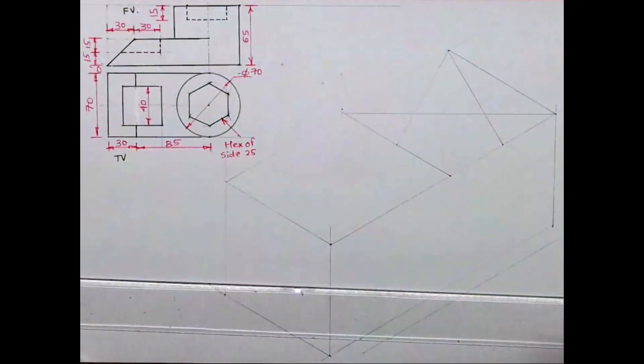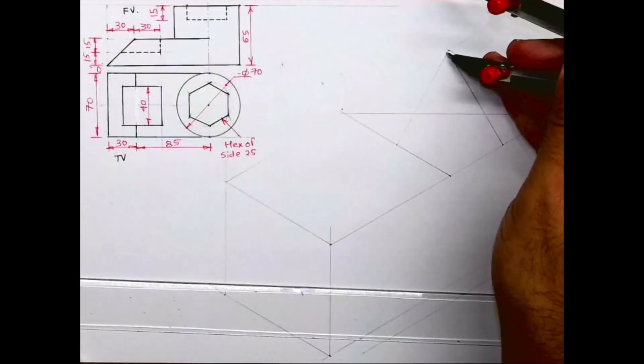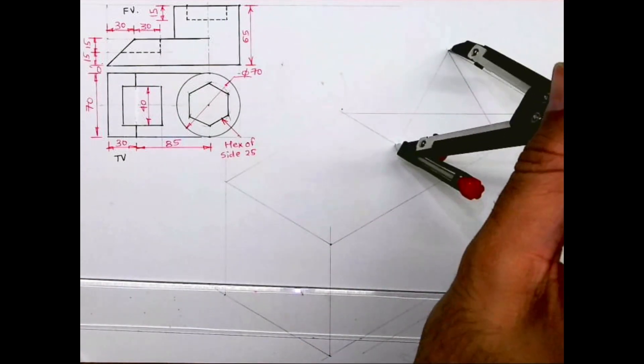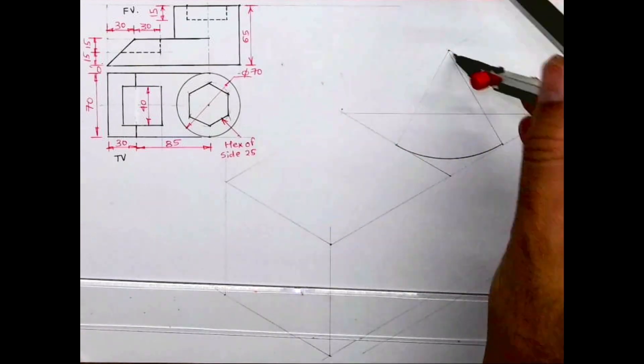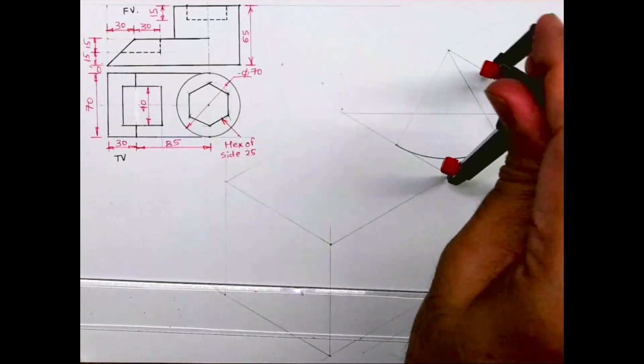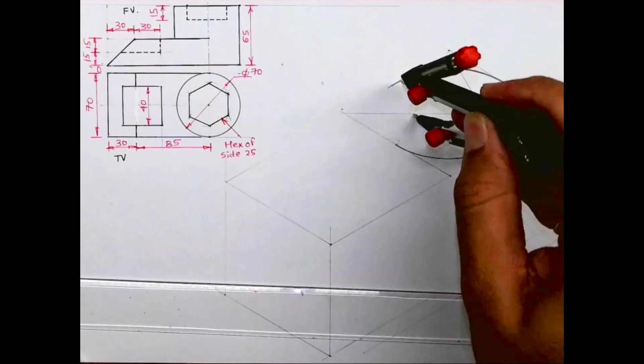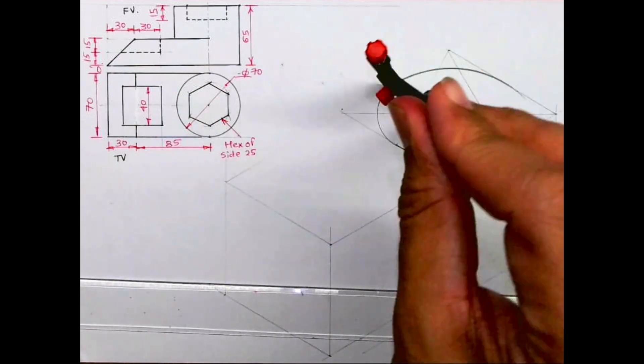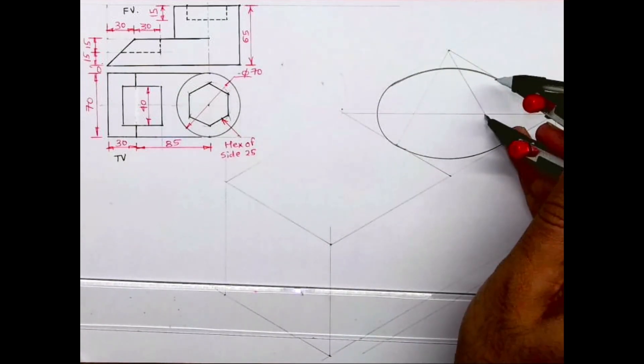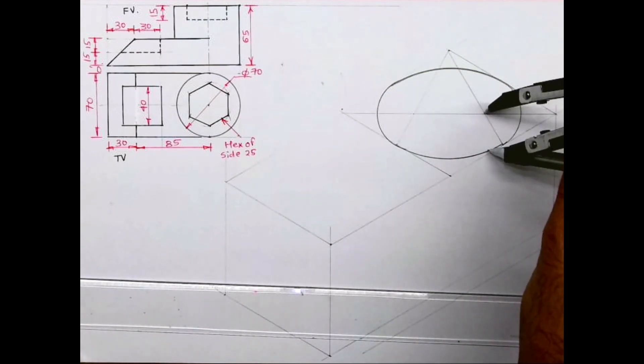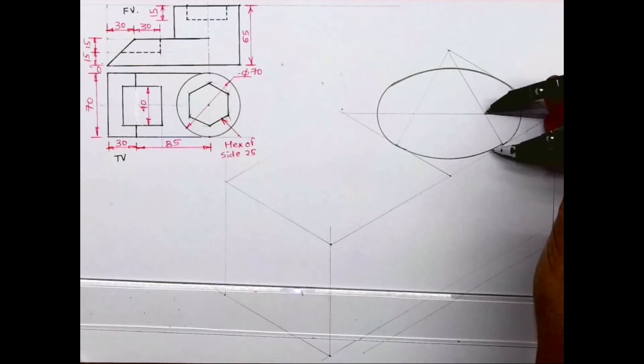From this opposite corner we'll join line like this. Now from this point we can draw curve like this. Same way from here, again you draw curve, again from here, and from here. I hope all of you know how to draw isometric circle by four center method. So that's what I have done.